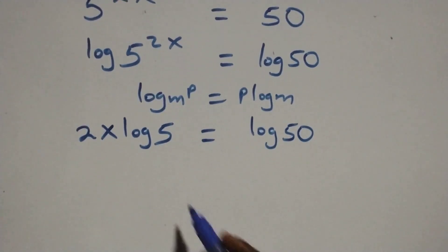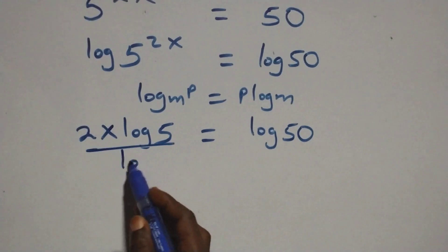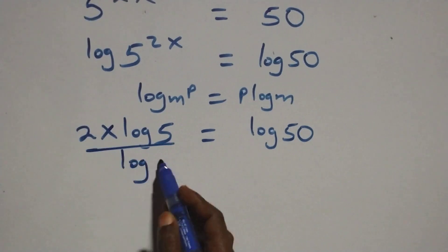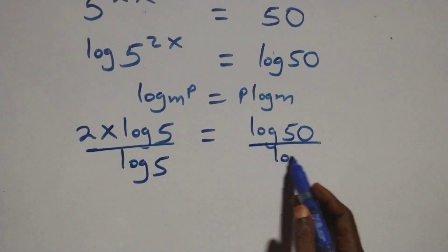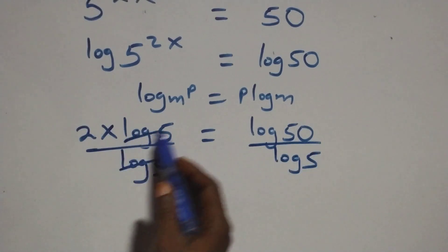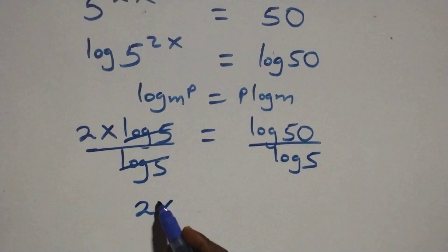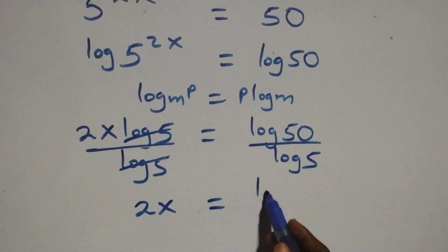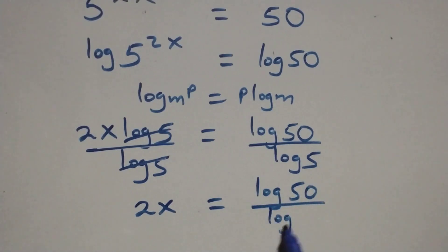The next step is we divide both sides by log 5 — divide this side by log 5 and also divide this side by log 5. The log 5 terms cancel each other, so we have 2x equals to log 50 over log 5.